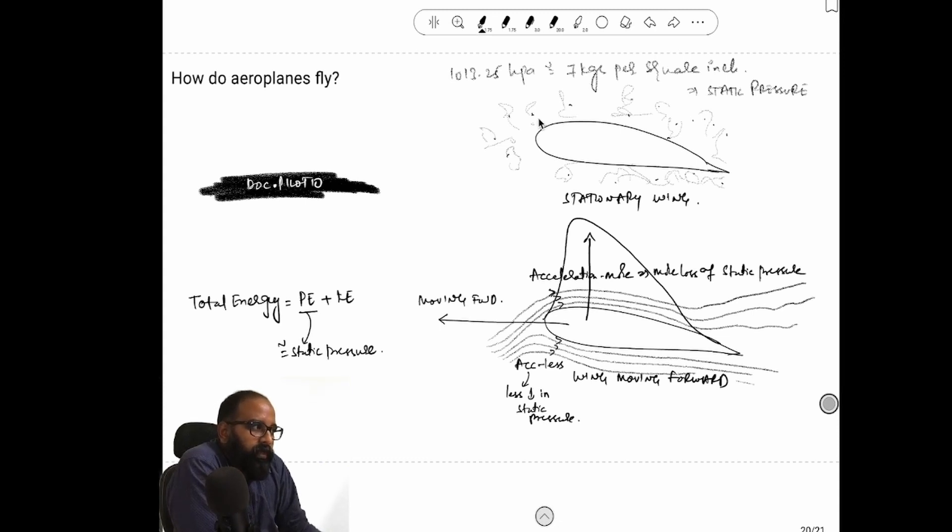Because of this random hitting, the wing experiences a pressure from all directions that is equal to 1013 hectopascals or 14.7 kgs per square inch. Imagine if I am sitting at sea level it would be the same pressure. One square inch of my body will experience 14.7 kgs of pressure.